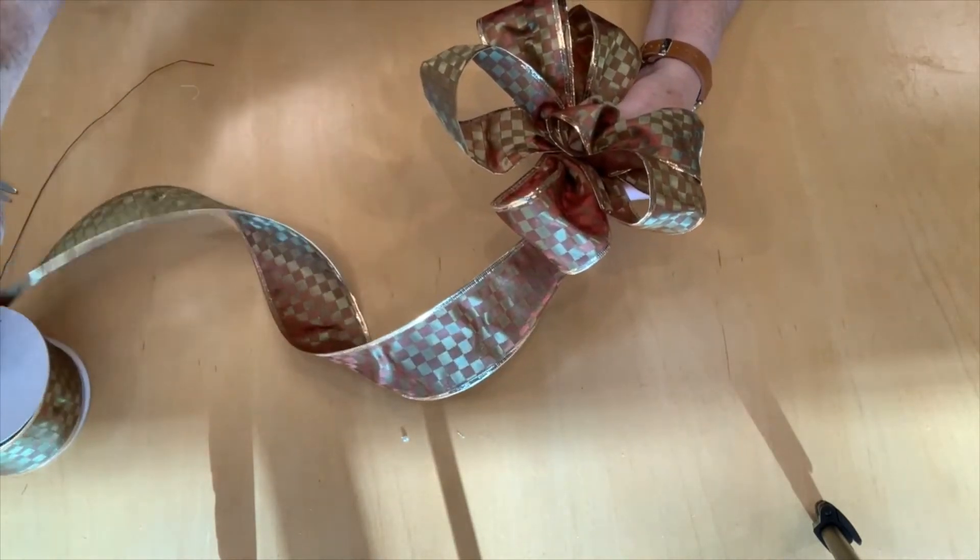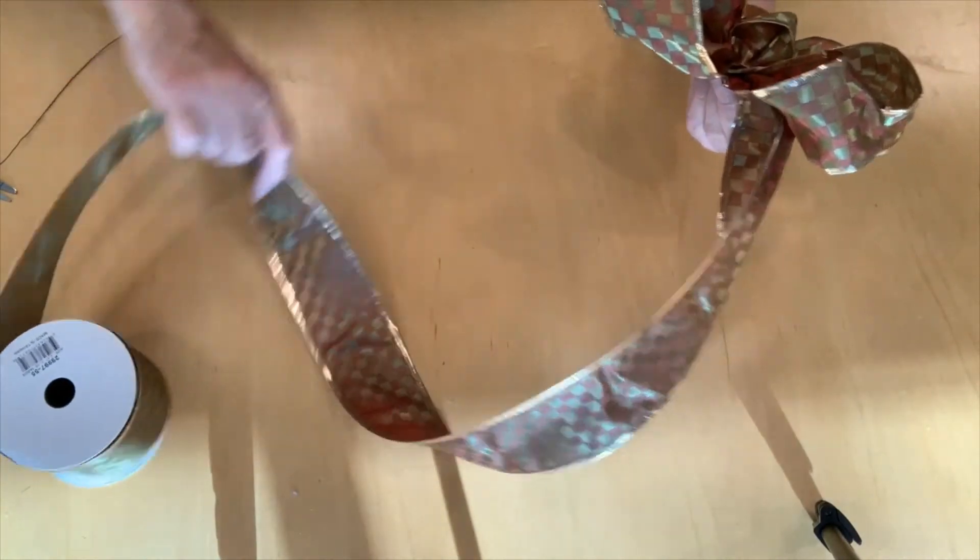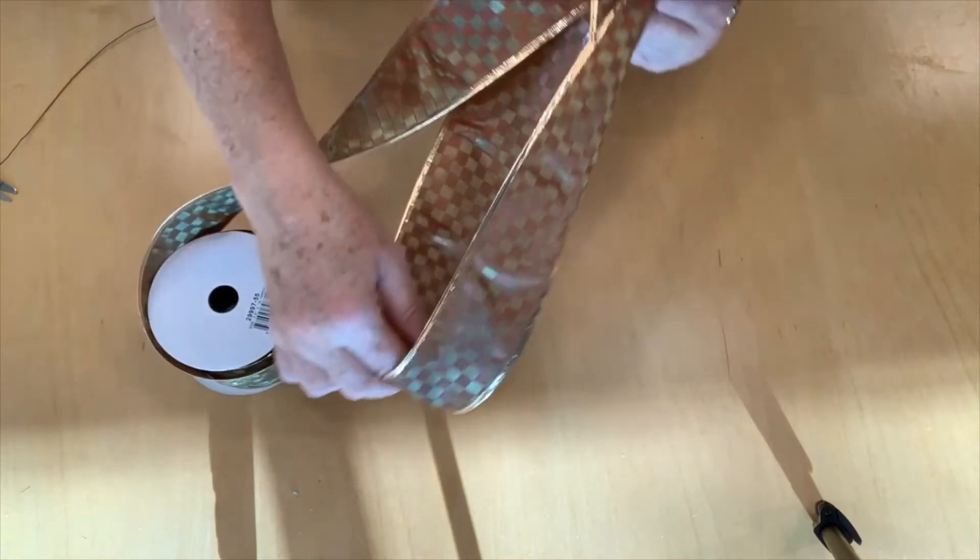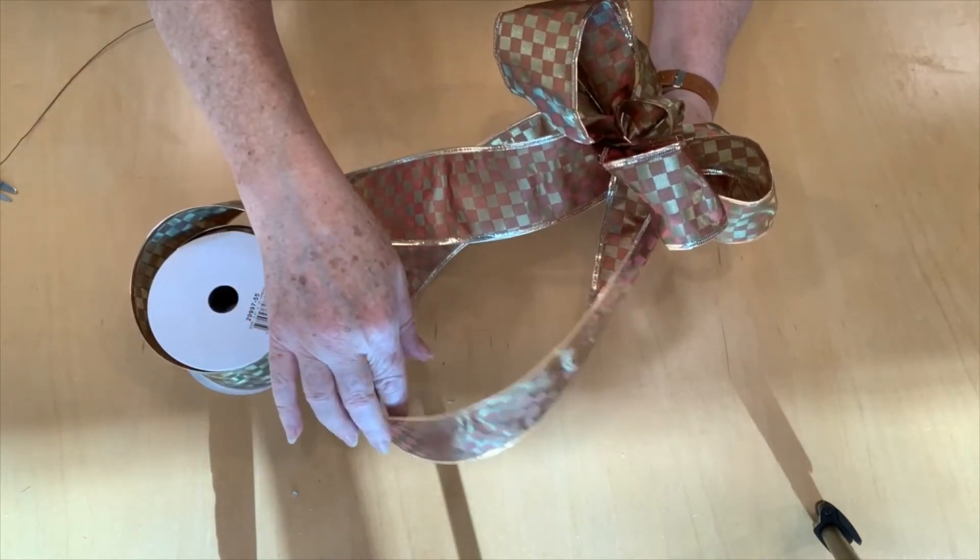I'm going to pull off a little bit extra ribbon and make one more really big loop here at the bottom. That's going to be the tails on my ribbon.